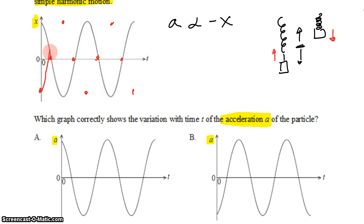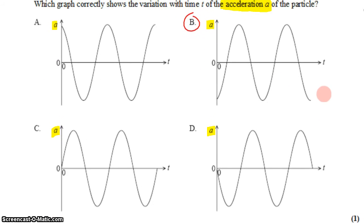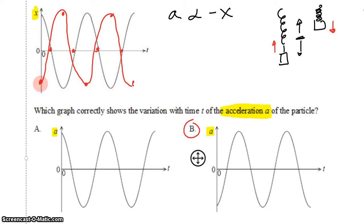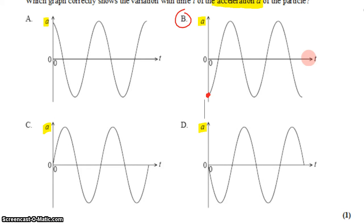So we want something that's going to look like this, more or less. That's B. When we look at the choices, we should start at a negative maximum. That's the only one that does that. So B must be the correct answer. Thank you.